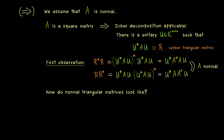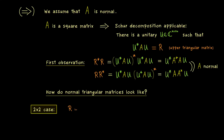The overall question is how normal upper triangular matrices look. If they are normal, we claim they must already be diagonal. To answer this, we first look at the general 2×2 case. Our upper triangular matrix R has three complex entries — let's call them A, B, and C. The first step is to calculate the adjoint R*, using the transpose followed by complex conjugation on every entry, giving us a lower triangular matrix.